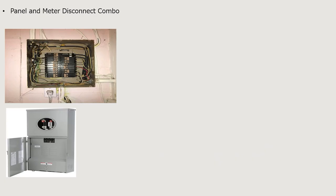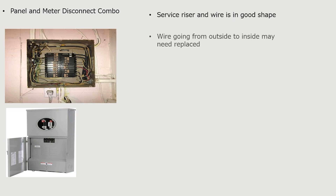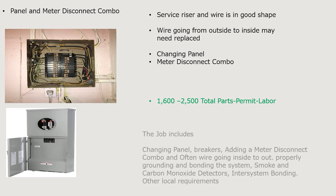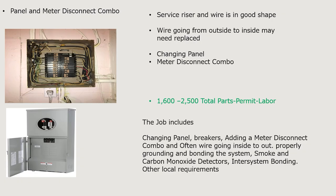Scenario three: panel plus meter disconnect combo. A normal meter socket is around $35 to $50, but a meter disconnect combo runs anywhere from $120 to $220. For a 400-amp service, those combos can be $800 to $900. It's also logistically harder — the panel is obviously much larger than a regular meter socket. Assuming the service riser and wire are in good shape, you can expect a price of $1,600 to $2,500 total — parts, permit, and labor — including the panel, breakers, meter disconnect combo, proper grounding and bonding, smoke and CO detectors, and inter-system bonding.